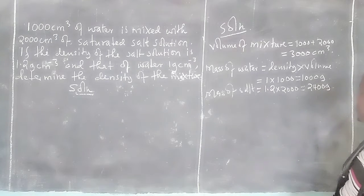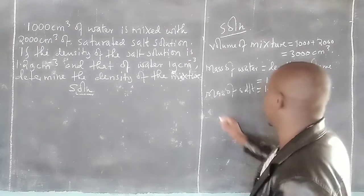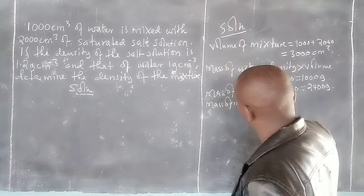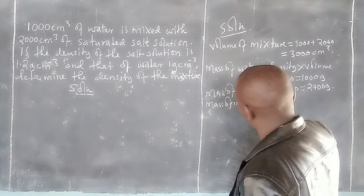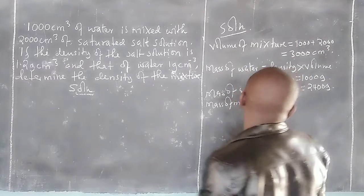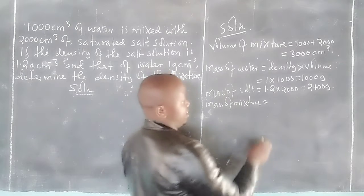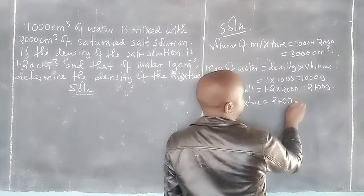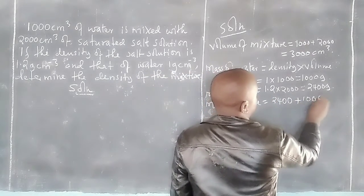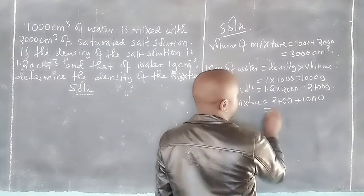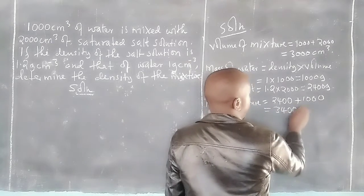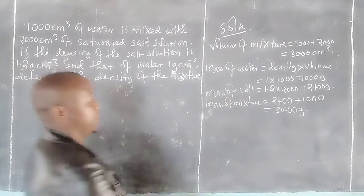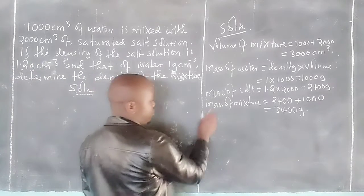Two thousand four hundred grams. Now we can get the mass of the mixture by adding the two masses together: 1000 plus 2400 gives us 3400 grams.